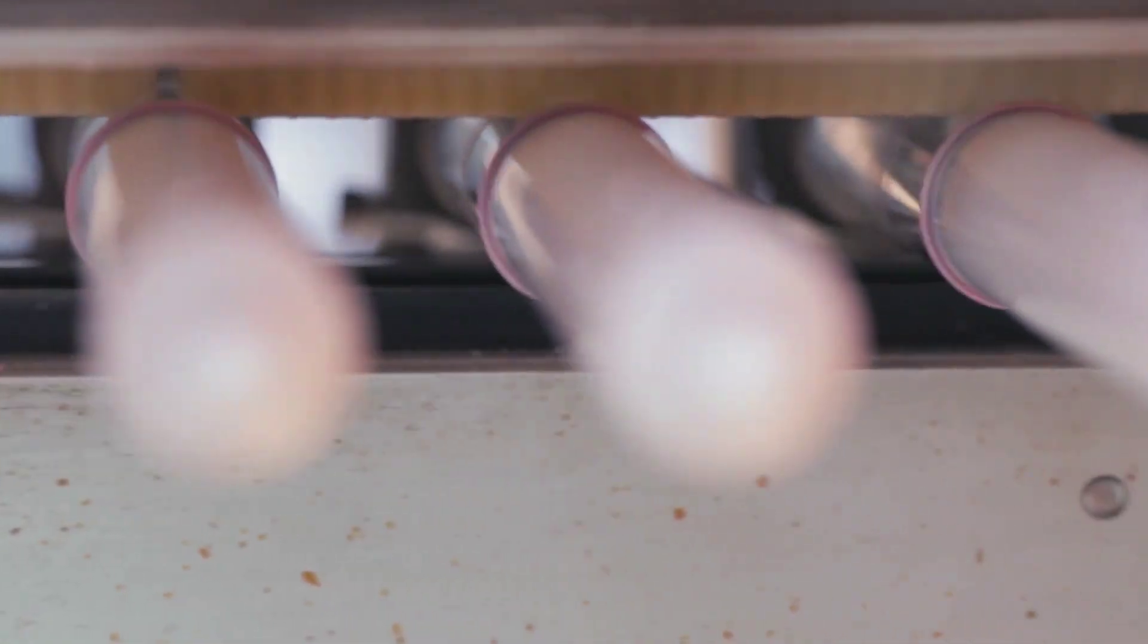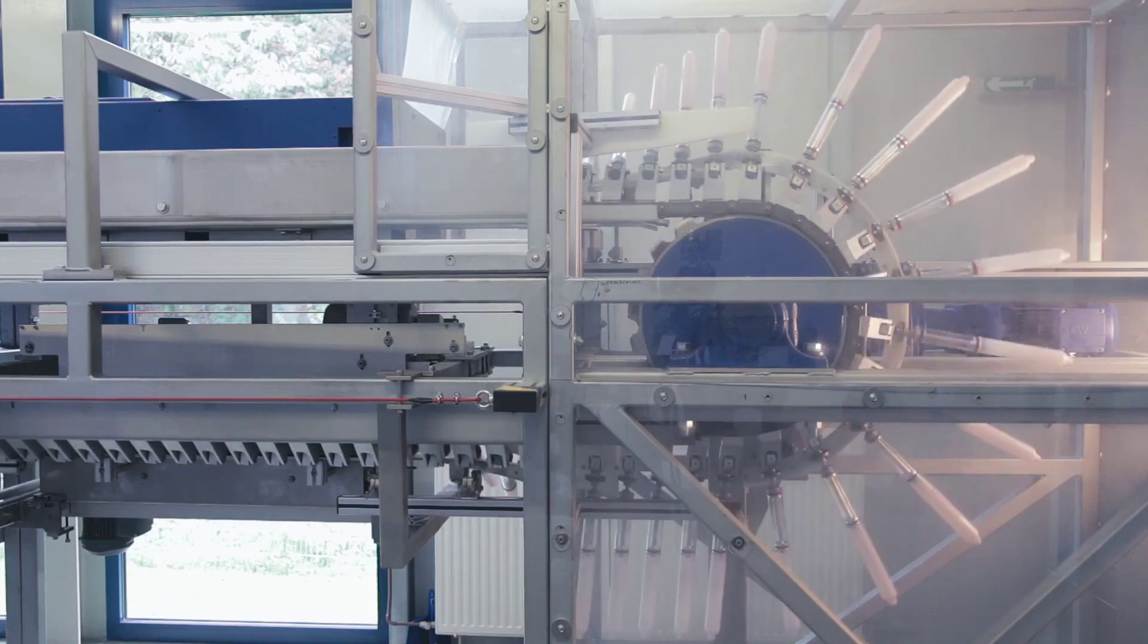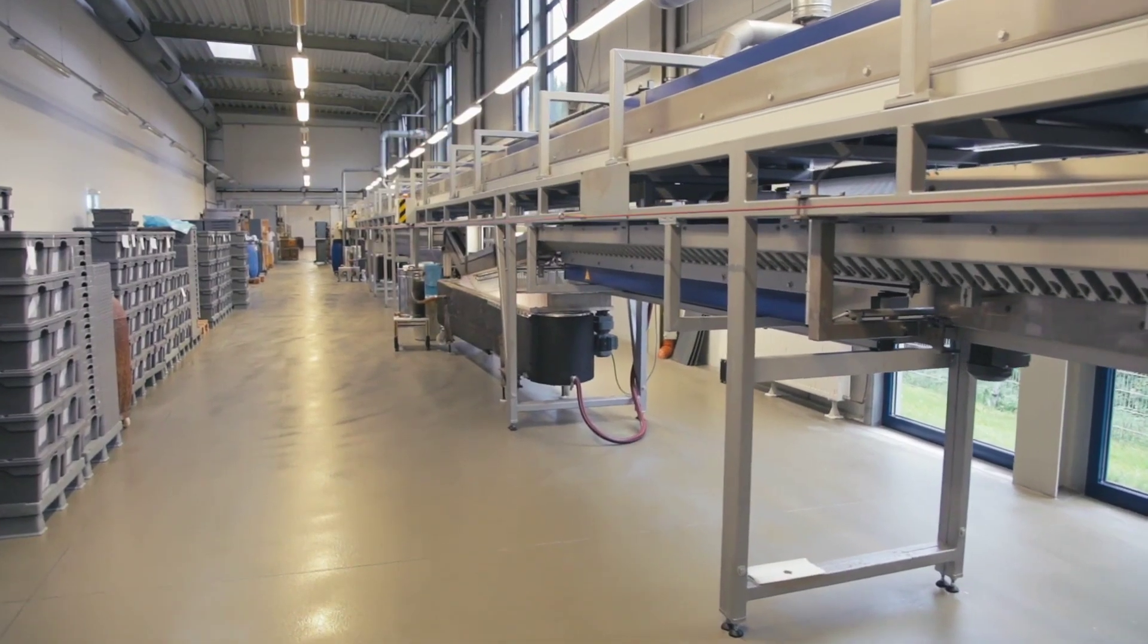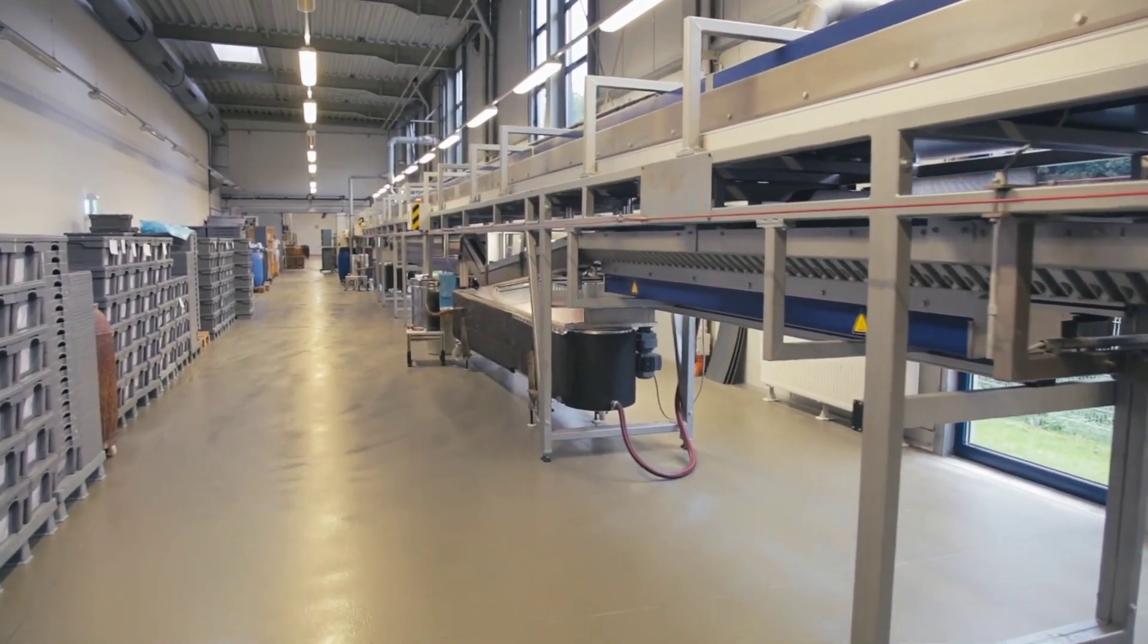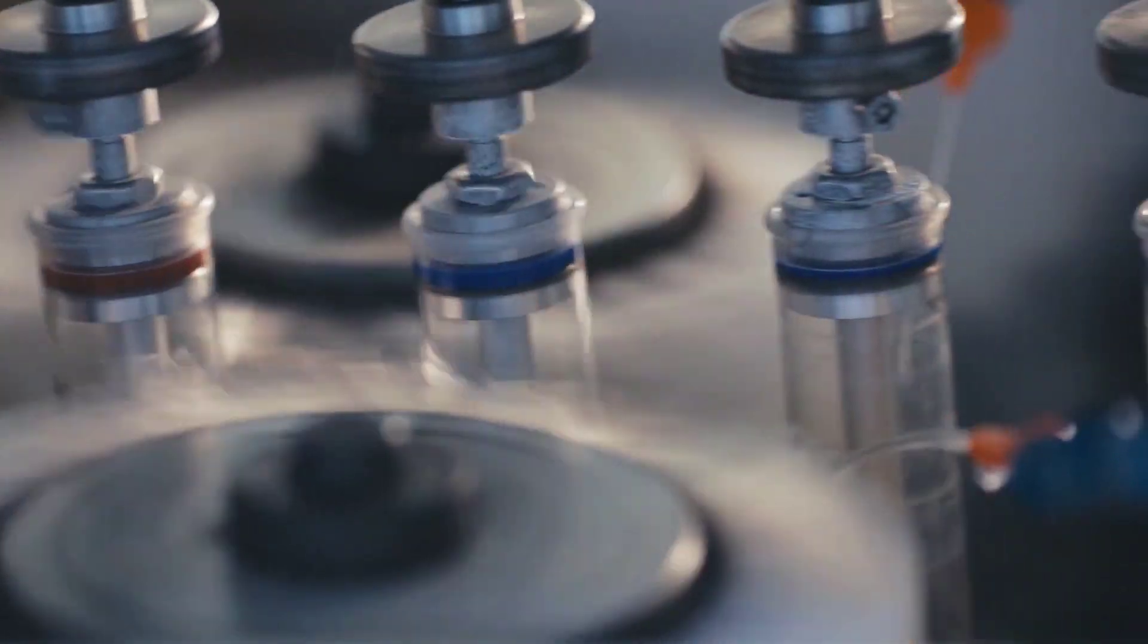Between each dip, the latex is hot air dried. After drying, the formers are dipped for a second time. The formers then pass through an oven to vulcanize the rubber. This completes the chemical reaction and ensures that the latex condoms have the necessary strength and elasticity.